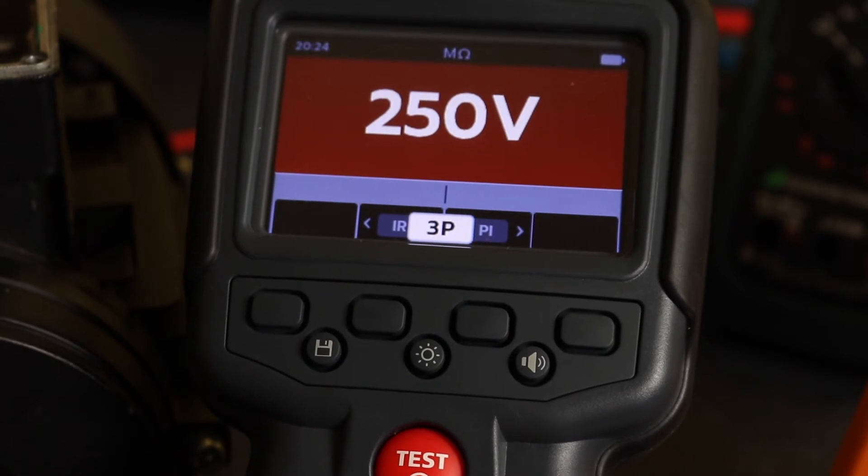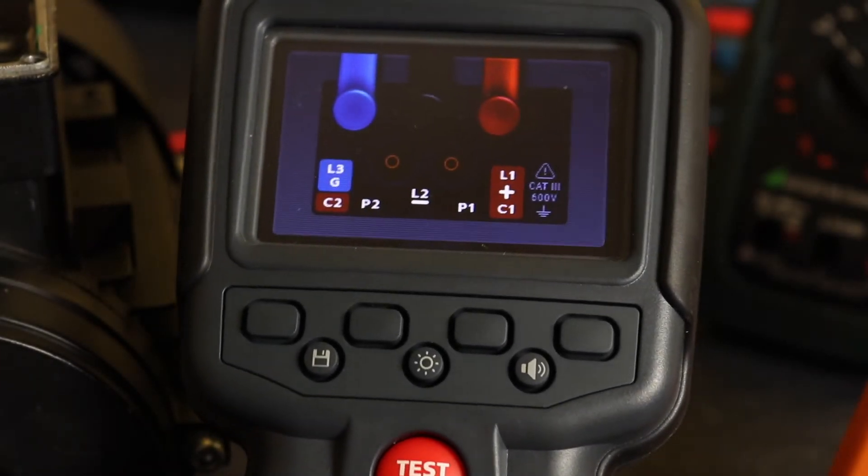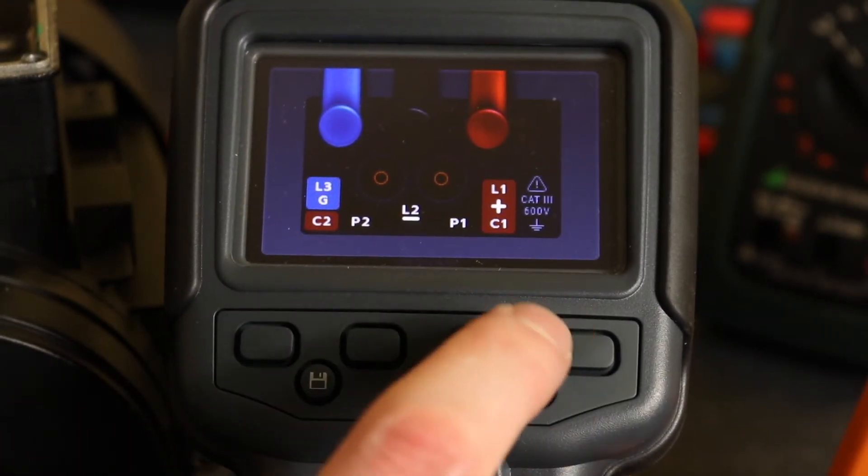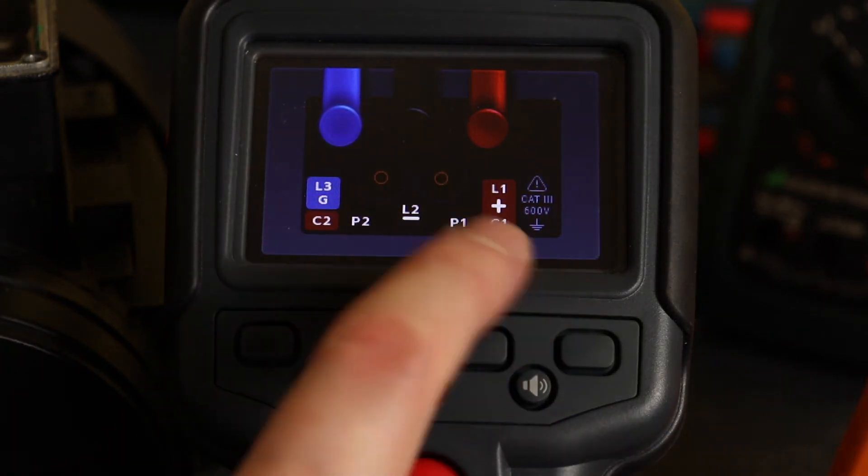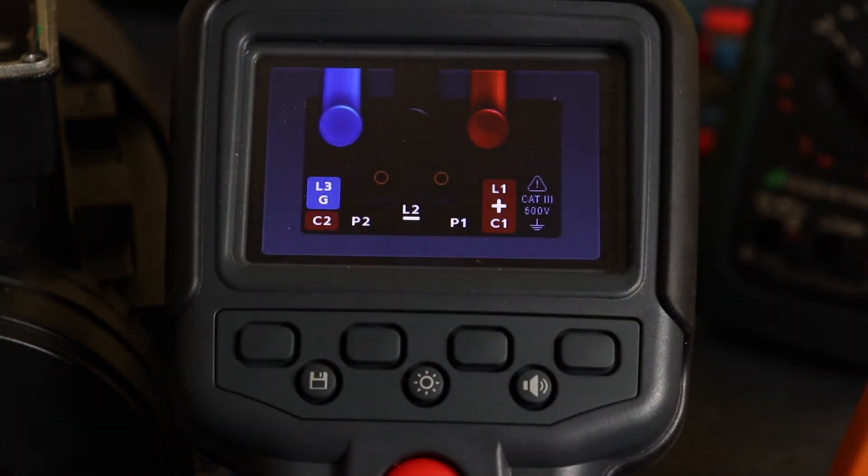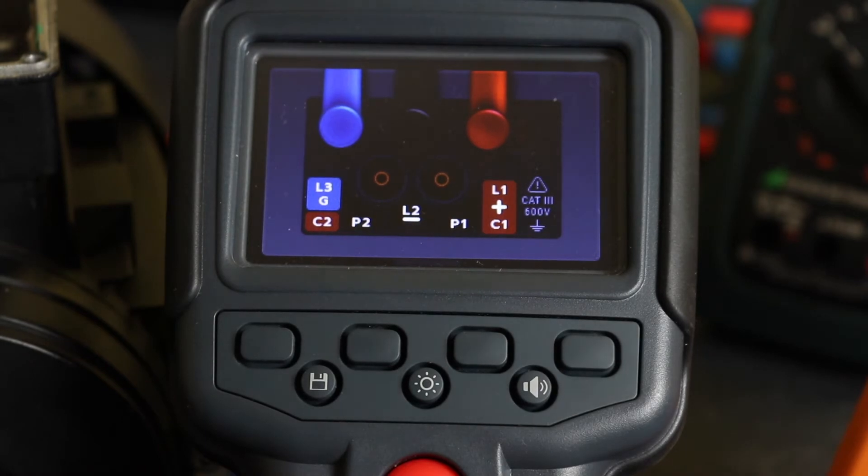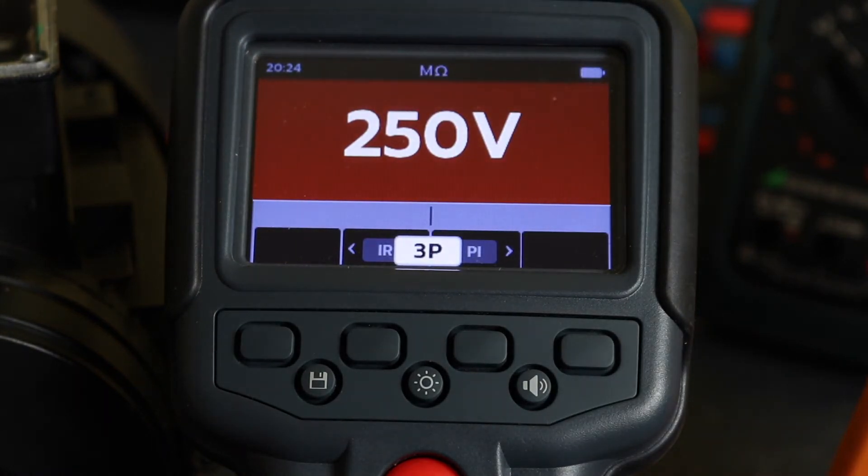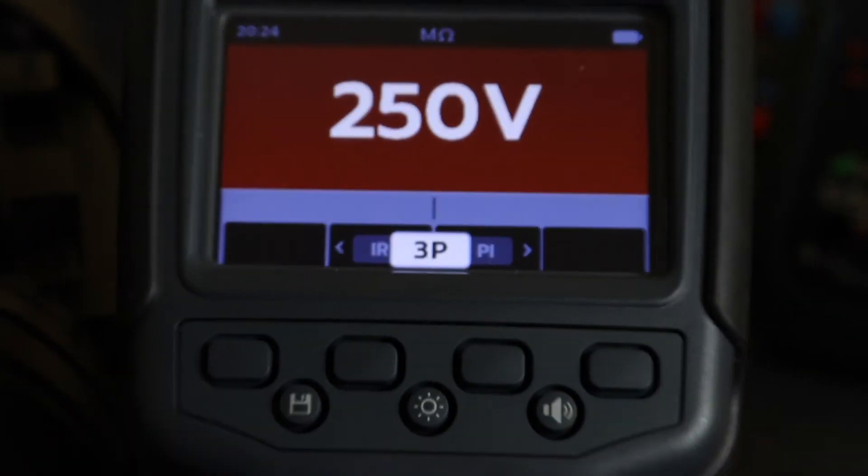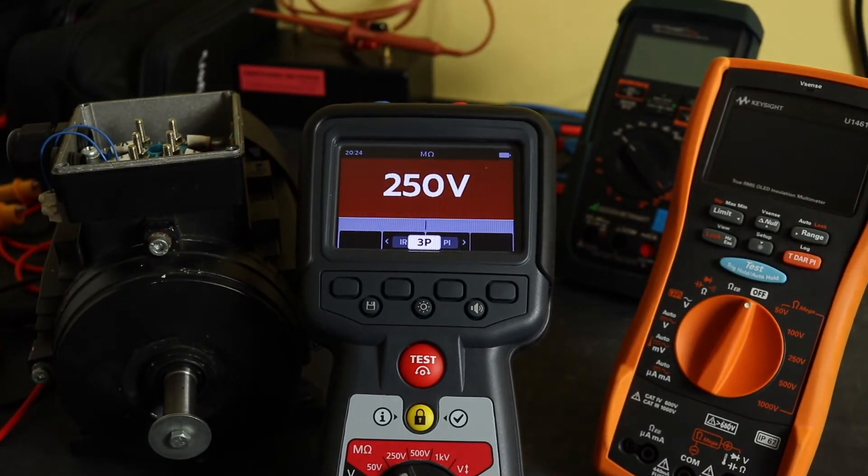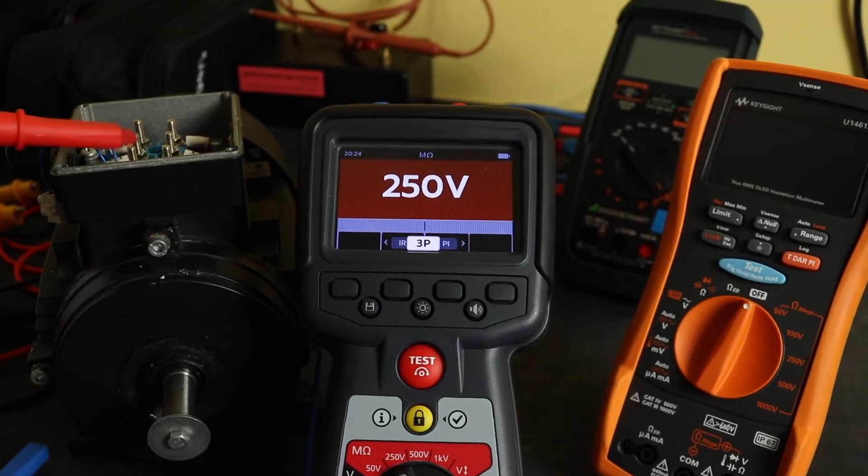So whilst I'm here, I'm going to hit the help button, and you can see it gives me the connections there, red, black and blue, onto L1, L2, L3. And we'll do that, zoom back out, so I'll just drop them onto the winding now.